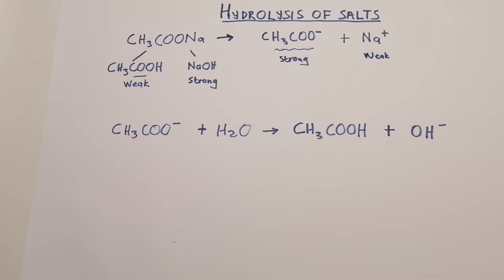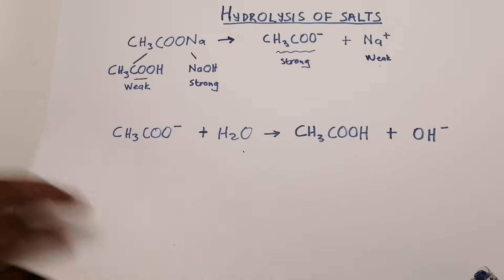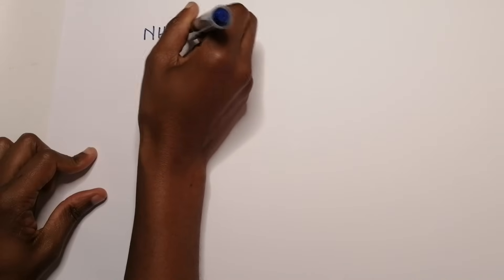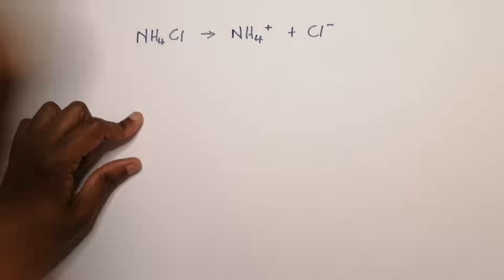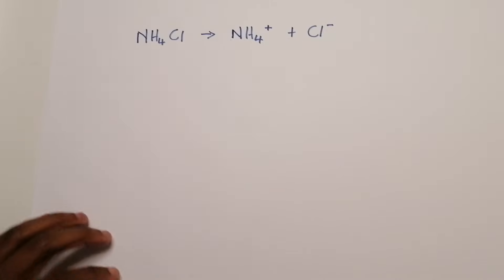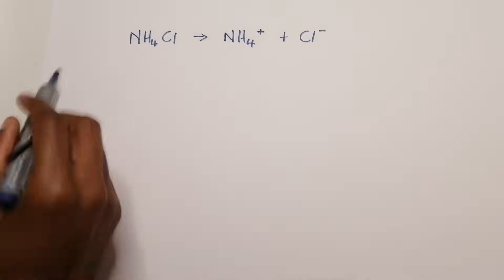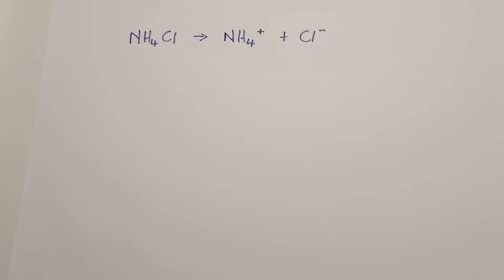Let me show you with another example. Let's take ammonium chloride, NH₄Cl. When we dissociate ammonium chloride, we get NH₄⁺ plus Cl⁻. We want to prove whether the resulting solution is acidic, basic, or neutral when dissolved in water.